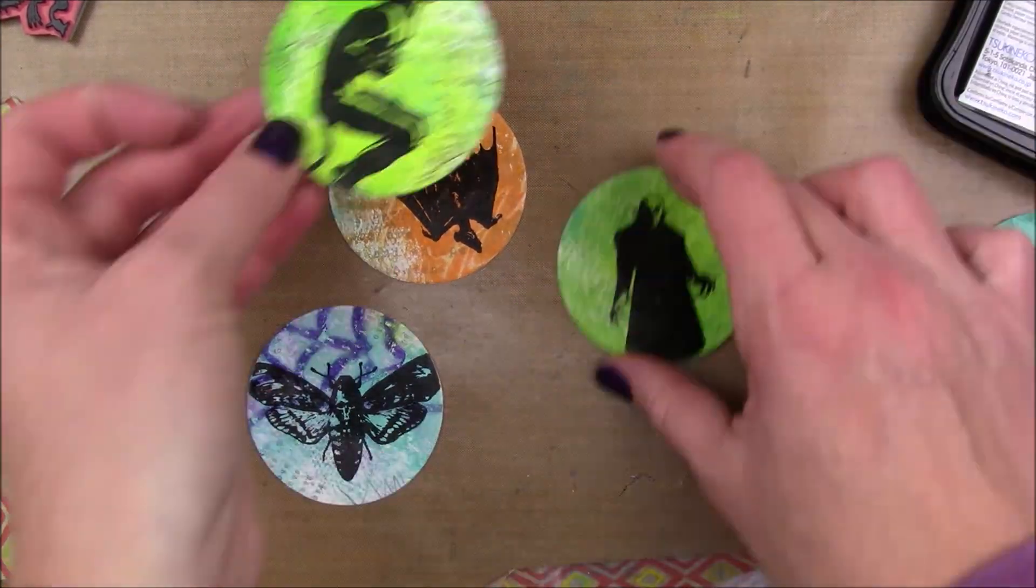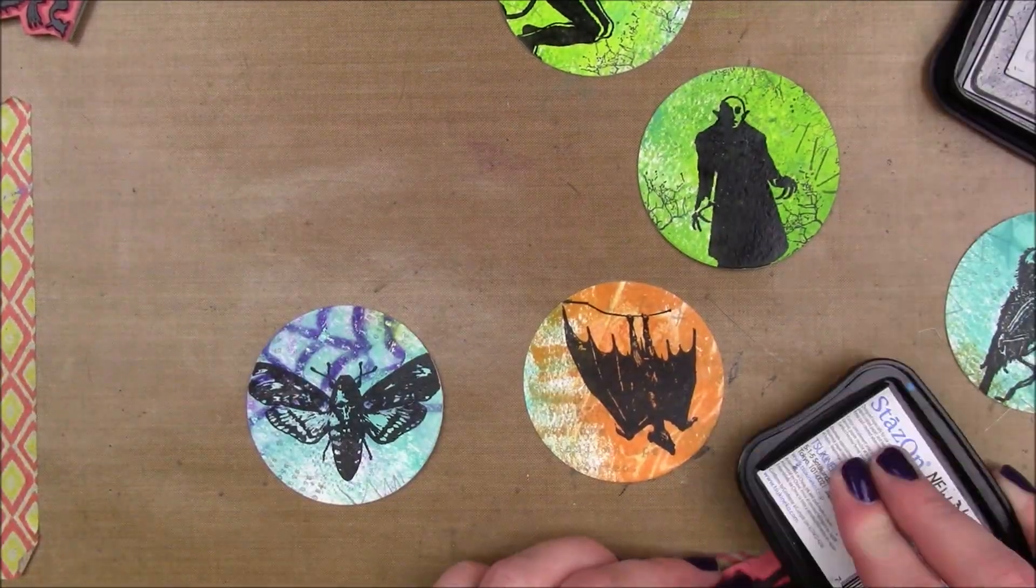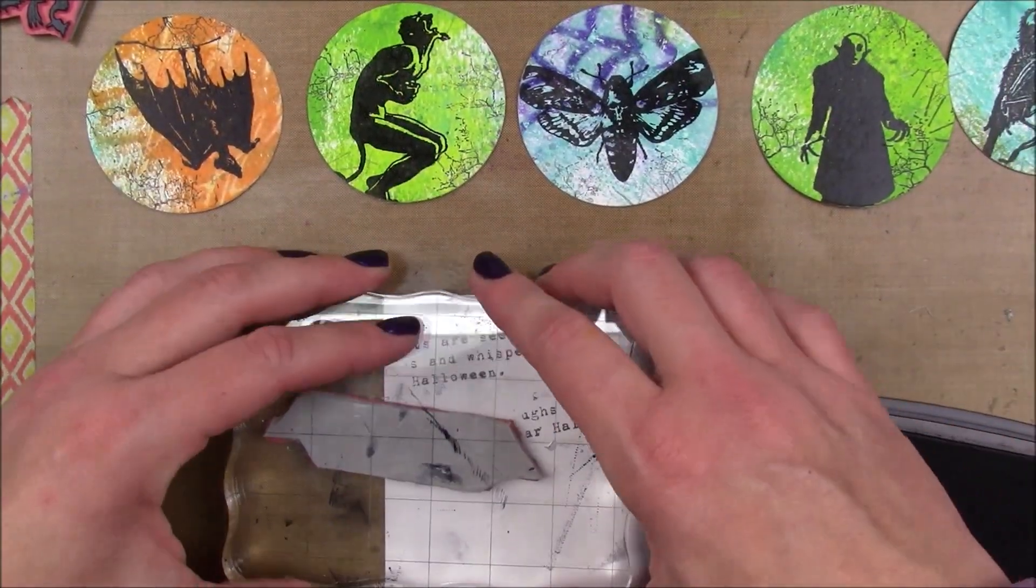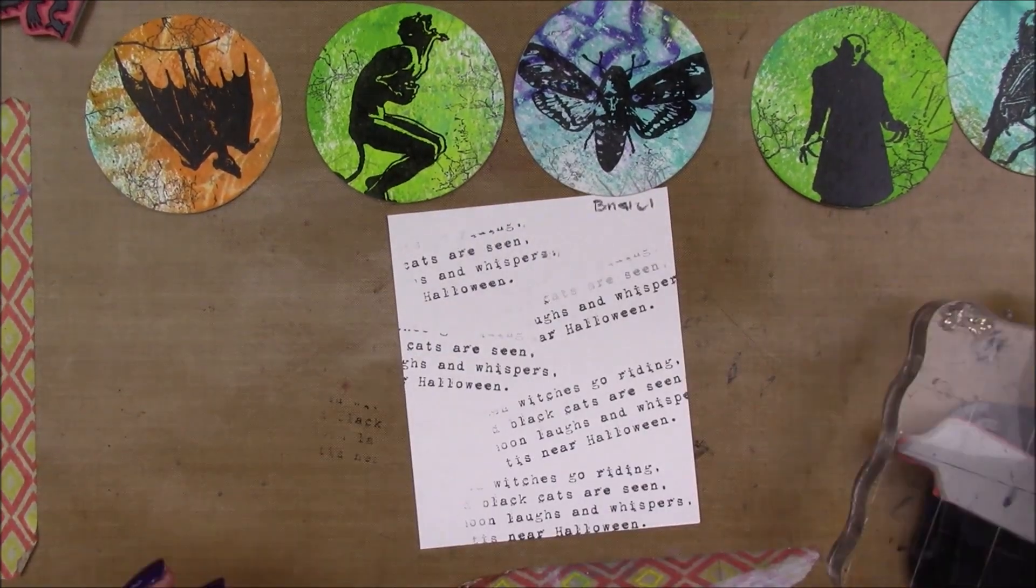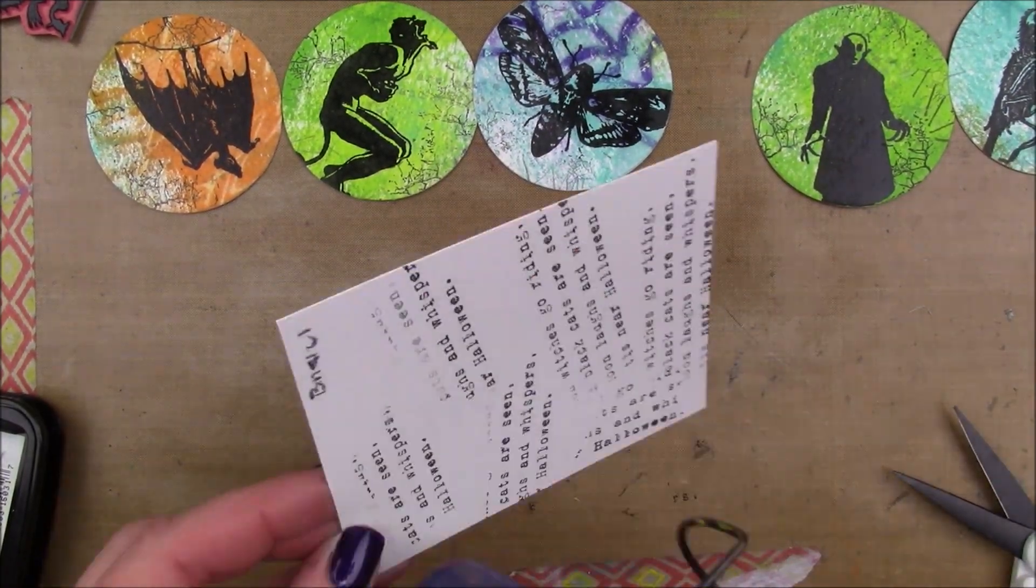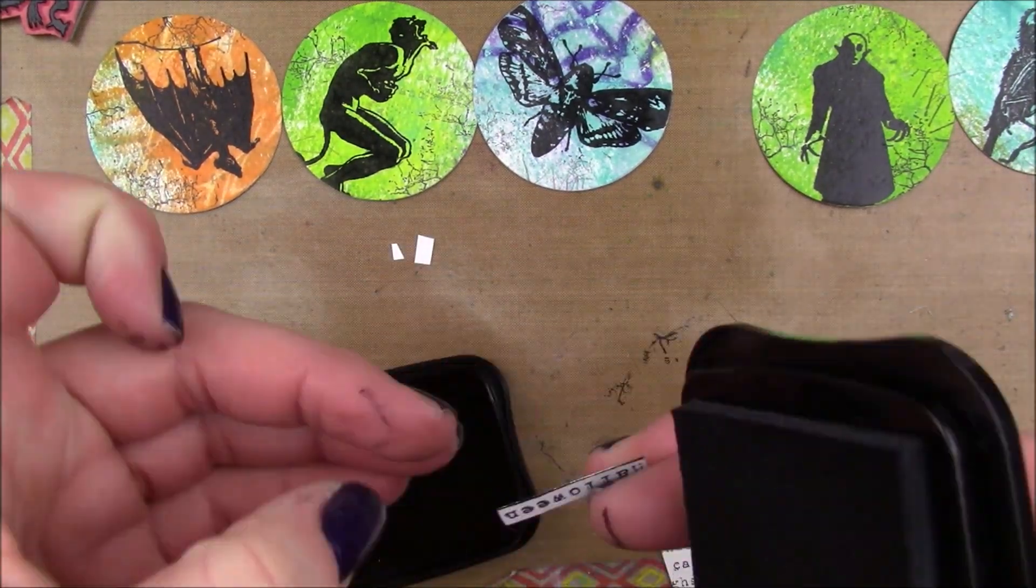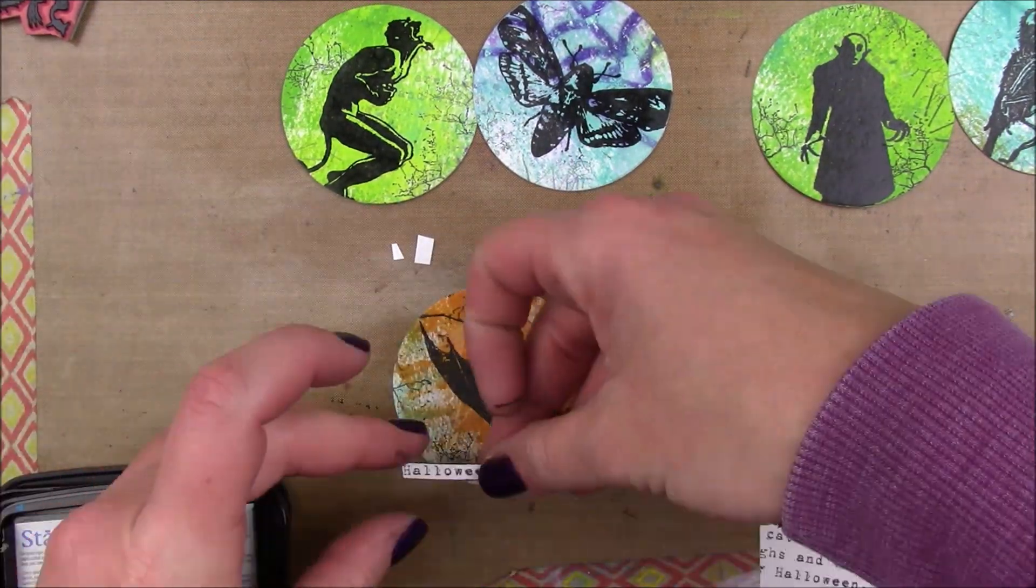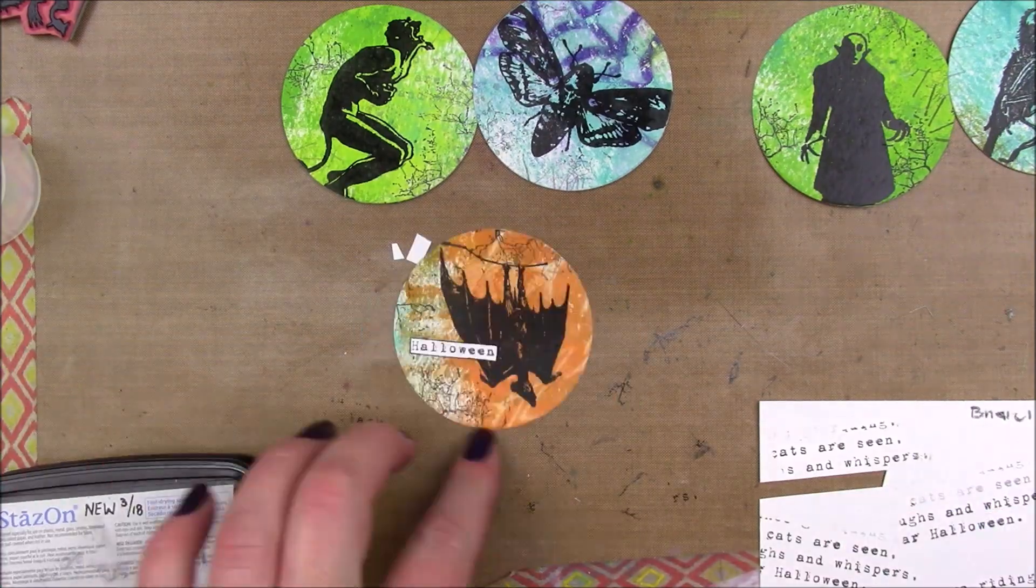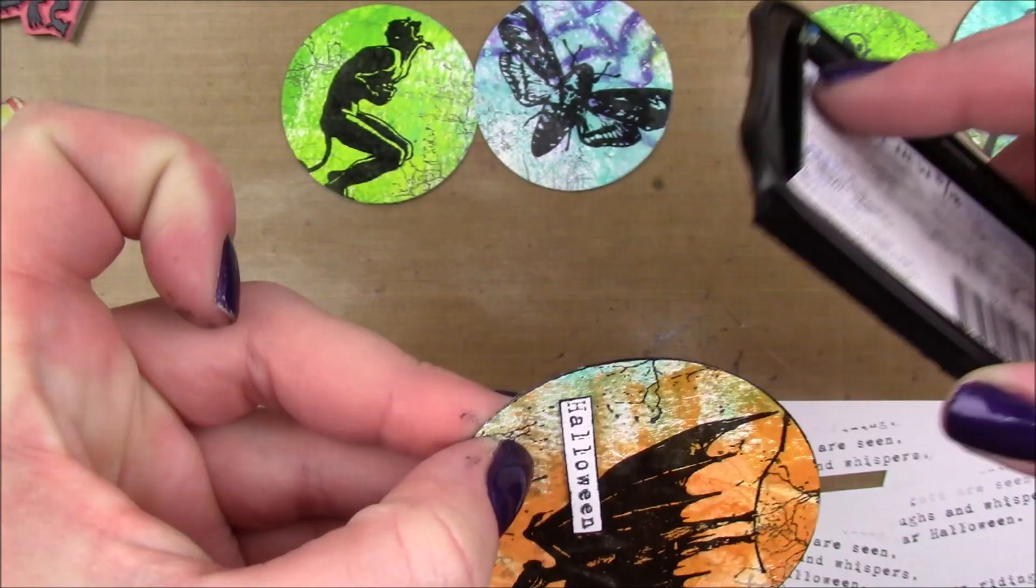I'm gonna stamp that around because I thought my coins needed a little bit extra something going on in the background. Then I'm stamping that same Halloween sentiment that I stamped in the background, and I'm stamping it all over because I'm just gonna cut out the part of the stamp that says Halloween. So I'm just gonna stamp that five times and then cut out the Halloween word. I'm gonna edge that with some StazOn black ink and then just apply that to each one so each coin says Halloween.